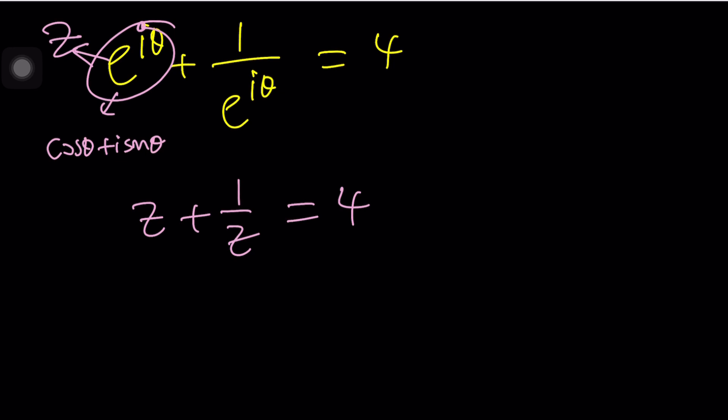Because Z plus one over Z, if Z is positive, we have an identity or inequality that says this is greater or equal to two if Z is positive. And it's less than or equal to negative two if Z is negative. It's kind of like an AM-GM situation. Anyways, so how do we solve it? Let's multiply everything by Z. And yes, we're going to have real solutions.